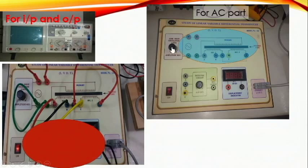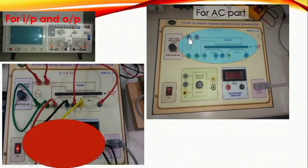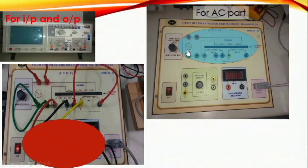An amplitude adjustment knob is given, so by using this knob you can vary your amplitude. First, vary this knob and observe your suitable input frequency at the CRO. For both CRO channels, connect one for the input and another for the output. Remember, this input and output observation is very important.